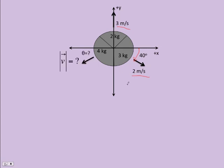The question is: what is the speed, the magnitude of the velocity, and direction of the four kilogram piece? To answer this we use conservation of momentum.